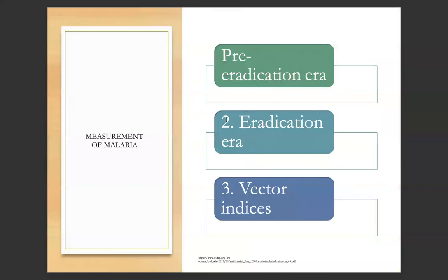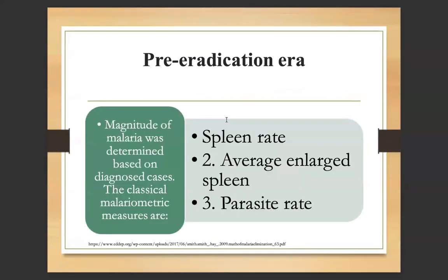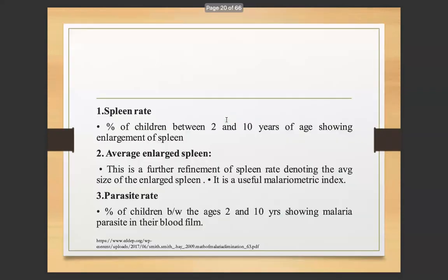Measurement of malaria in the pre-eradication era was determined based on diagnosed cases. The classical malaria metrics are the spleen rate, the average enlarged spleen, and the parasite rate. The spleen rate is the percentage of children between 2 and 10 years of age showing an enlarged spleen. The average enlarged spleen is a further refinement of the spleen rate denoting the average size of the enlarged spleen. The parasite rate is the percentage of children between ages 2 and 10 years showing malaria parasites in their blood films.